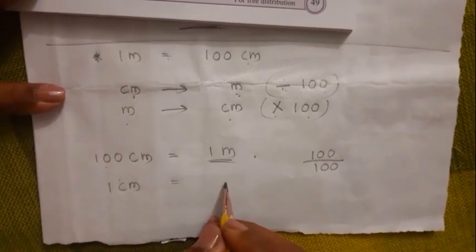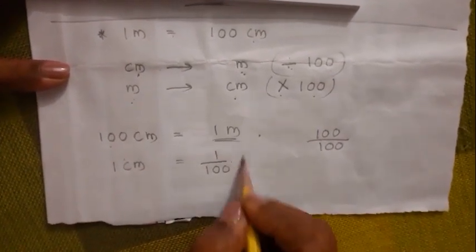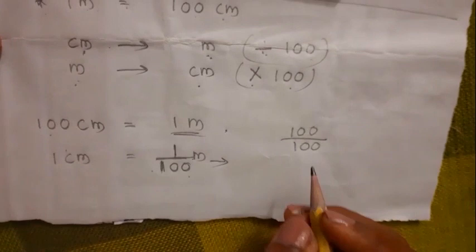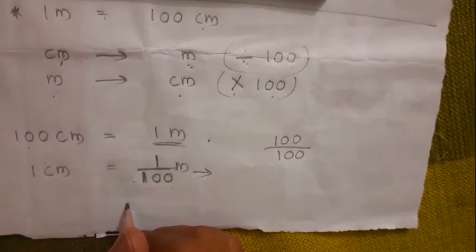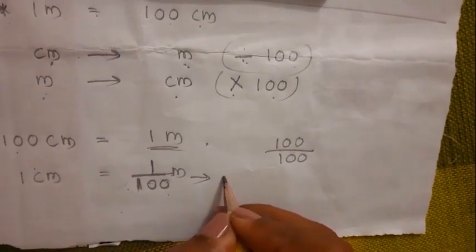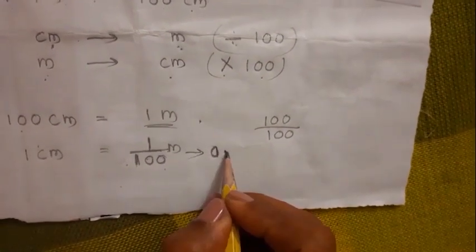You have to write it as a fraction form — 1 divided by 100. How do you write this as a decimal form? You can see there are two zeros. There are no whole numbers, so you write 0, then keep a decimal point to separate whole numbers from decimals.